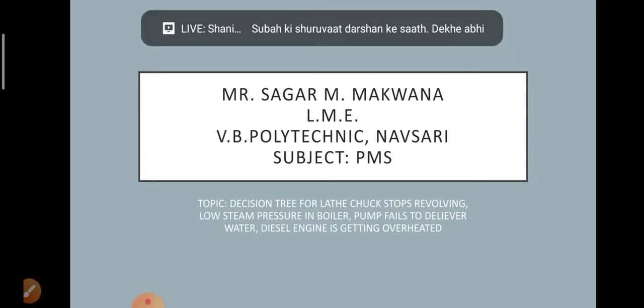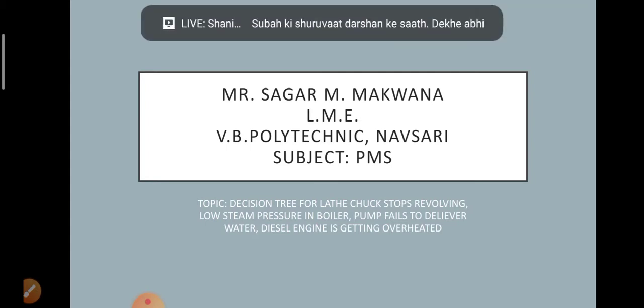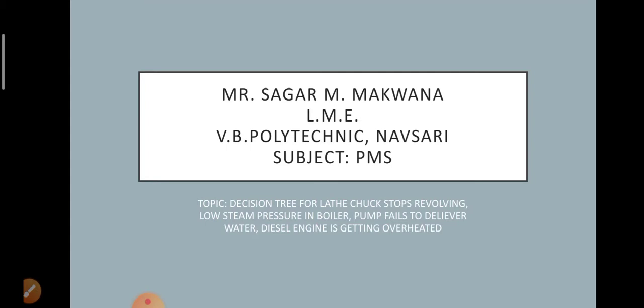Today we are going to learn the topic: decision tree for lathe chuck stops revolving, then decision tree for low steam pressure in boiler, then pump fails to deliver water, and diesel engine is getting overheated. These are the decision trees we are going to learn.